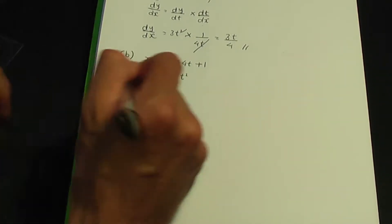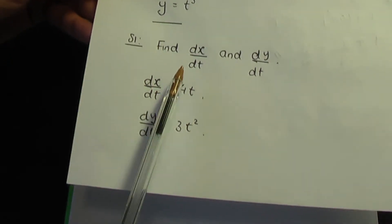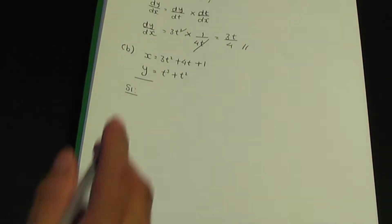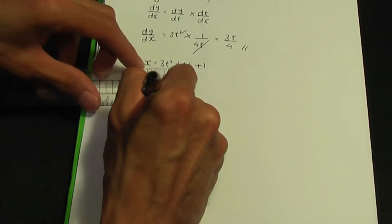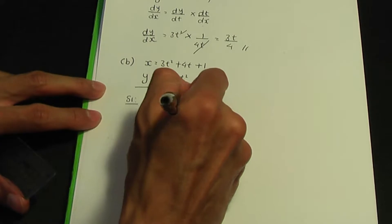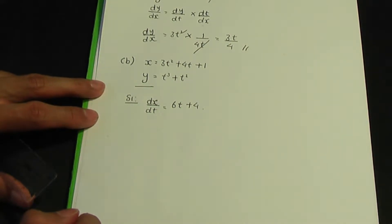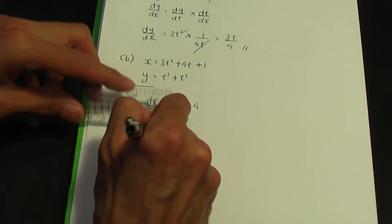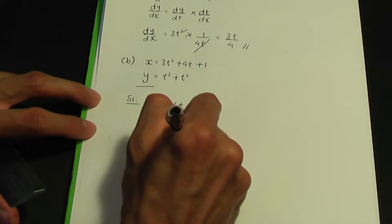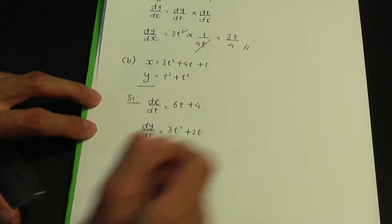Step one: find dx by dt and dy over dt. Differentiating x: 3t squared gives 6t, and 4t gives 4, so dx by dt equals 6t plus 4. Differentiating y: t cubed gives 3t squared and t squared gives 2t, so dy over dt equals 3t squared plus 2t.